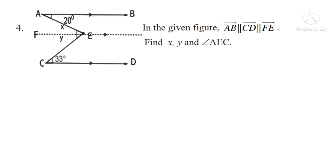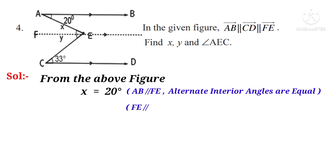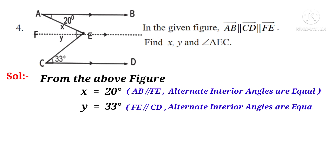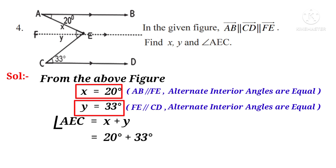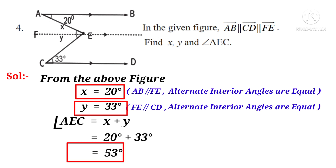Problem 4. In the given figure, AB is parallel to CD is parallel to FE. Find X, Y and angle AEC. Solution: Since AB is parallel to FE, X equals 20 degrees because alternate interior angles are equal. In between the parallel lines FE and CD, Y equals 33 degrees because alternate interior angles are equal. Angle AEC is the combination of X and Y, so angle AEC equals 20 plus 33 equals 53 degrees. So X equals 20 degrees, Y equals 33 degrees, and angle AEC equals 53 degrees.